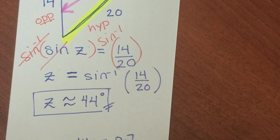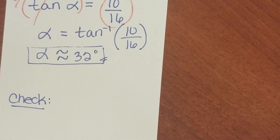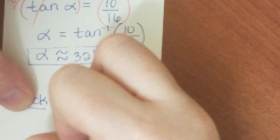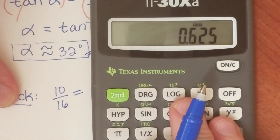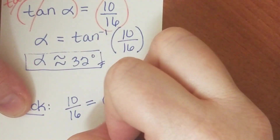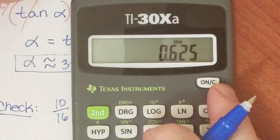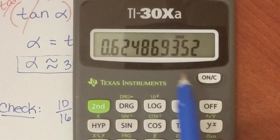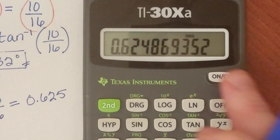Looking at our second example with alpha: if alpha is equal to 32 degrees, then the tangent of 32 degrees should be equal to 10 over 16. So 10 over 16 equals 0.65. If we plug in the tangent of 32 degrees and get something close to that, then we did our work correctly. Tangent of 32 degrees — if I round that to the same level of accuracy, I'm going to get 0.65. So that means I did it correctly.